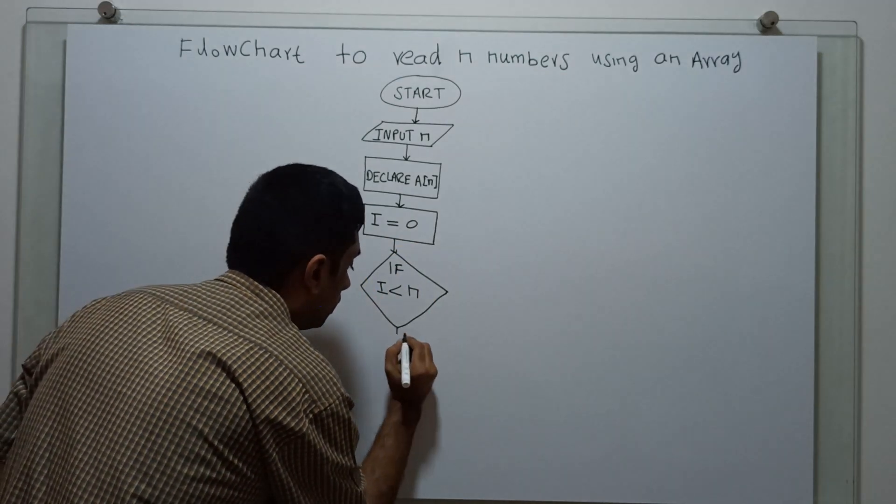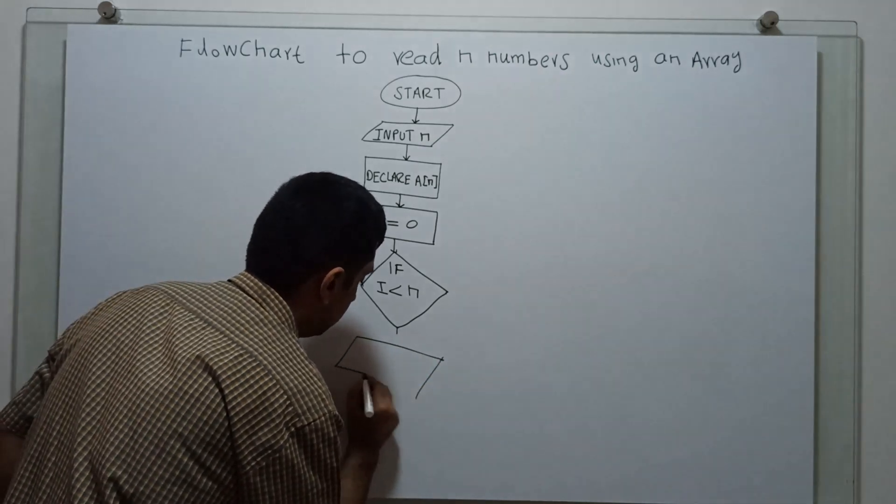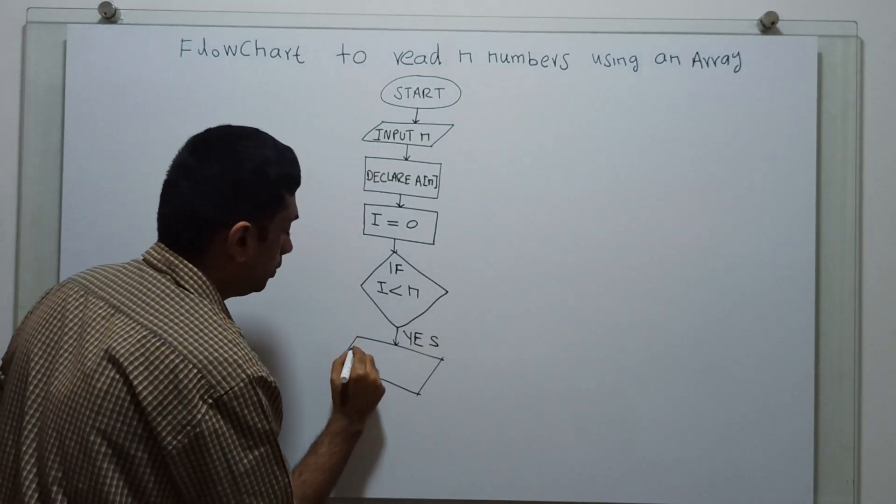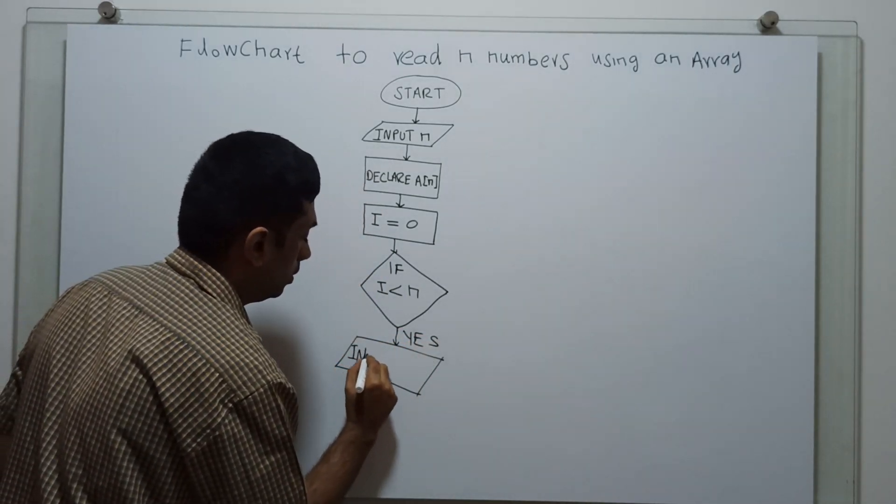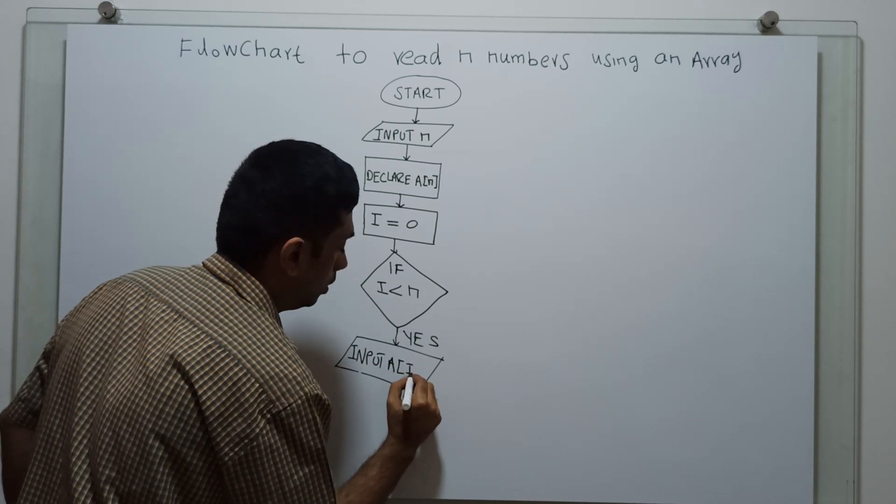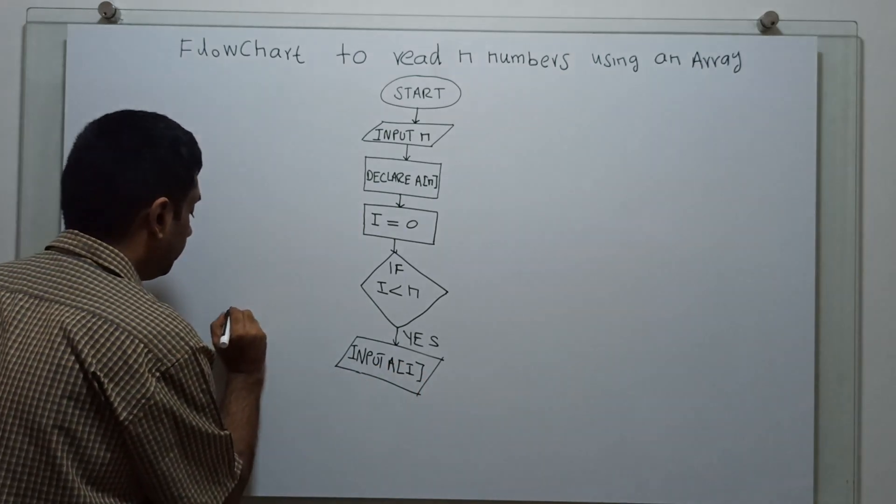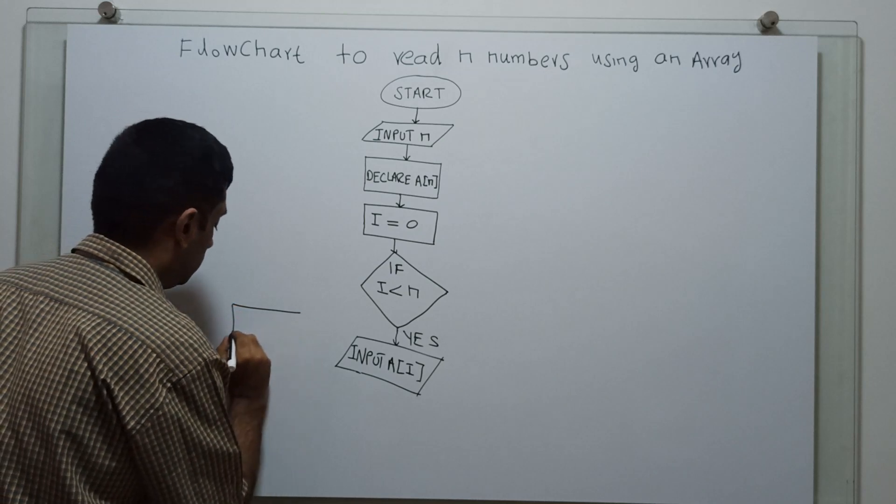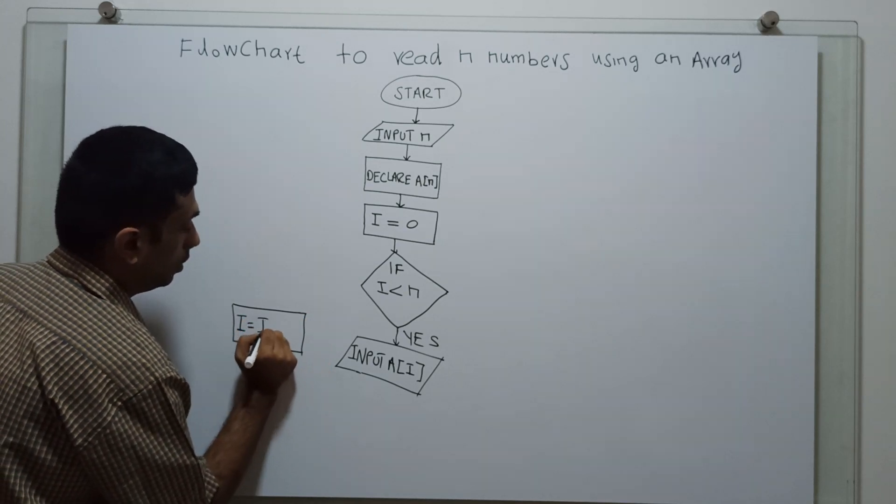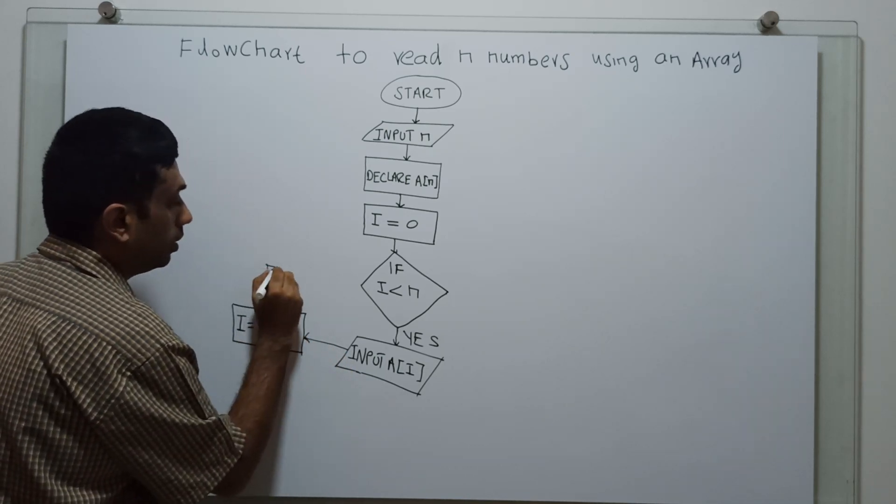If it is yes means, I am opening an input. Input a of i. I am getting an array input a of i. Next, I am incrementing i by 1. i equal to i plus 1. And I am adding it back to the decision statement.